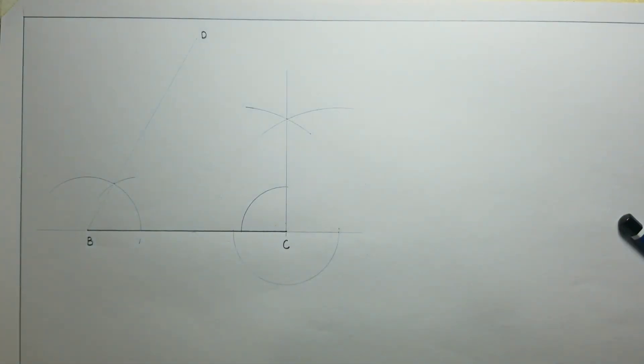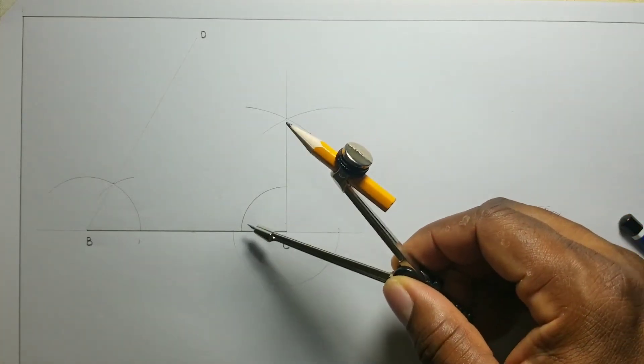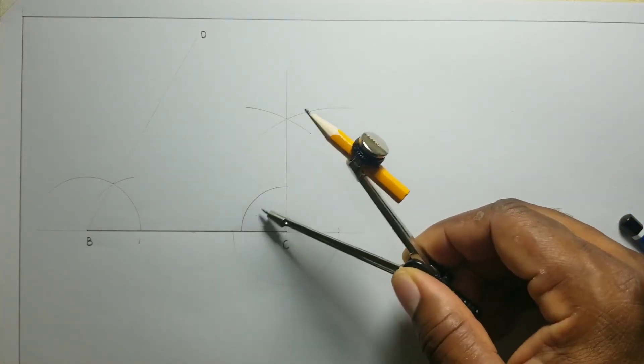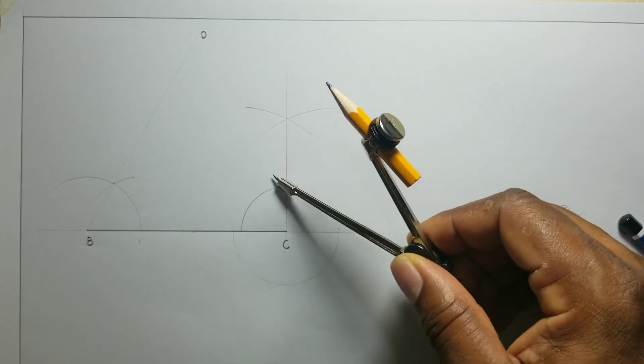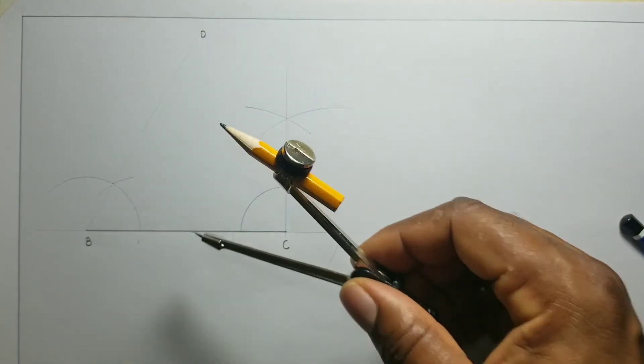I will then open my compass just a little more and use these two points to bisect my 90 degree angle.